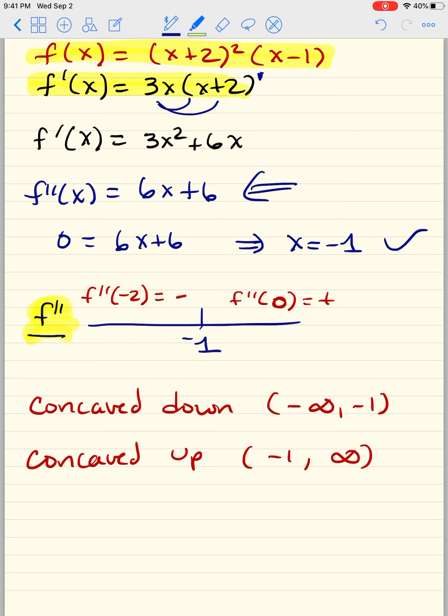Now I'm going to put a double derivative there on my number line, okay? And then f double prime of negative 2, well that's a negative. f double prime of 0, that's a positive. So what does that mean? That means it's concave down because it's negative. It's concave down from negative infinity to negative 1, and then it's happy face because it's a positive, concave up from negative 1 to infinity.